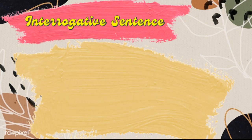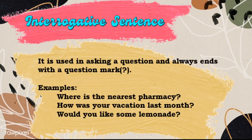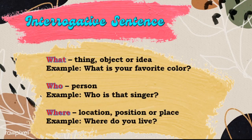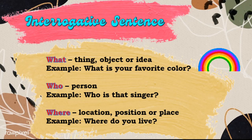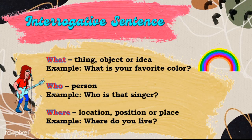What about an interrogative sentence? It is used in asking a question and always ends with a question mark. Examples: Where is the nearest pharmacy? How was your vacation last month? Would you like some lemonade? Also, in asking questions, we may use the following words to begin our sentences. The word 'what' is used in asking for a thing, object, or idea — for example, what is your favorite color? The word 'who' is used in asking for a person — for example, who is that singer?